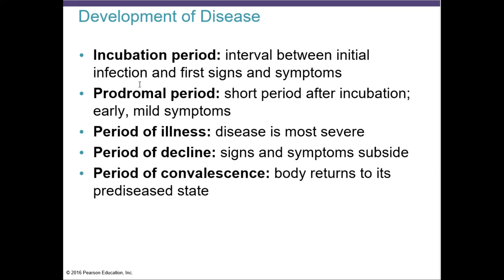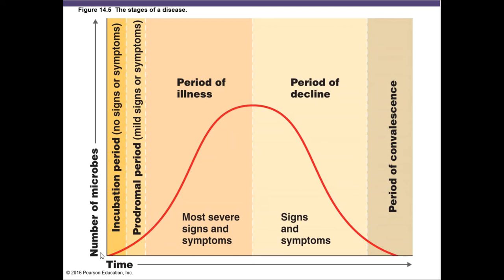The incubation period is the interval between initial infection and the first signs of disease. Looking at the graph: during incubation, microbes are starting to multiply. Then you have mild signs or symptoms in the prodromal period. After that comes the period of illness, where microbes are actively multiplying and most symptoms and signs are severe. During decline, microbes are starting to die, but you can still have symptoms and signs.